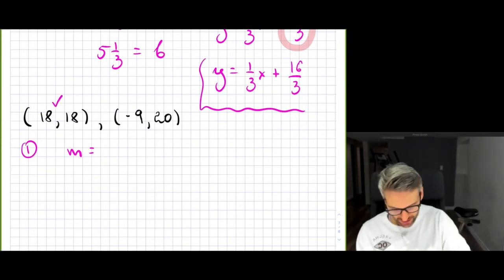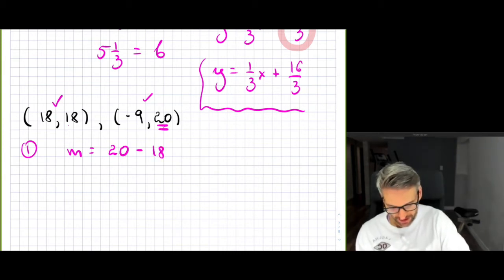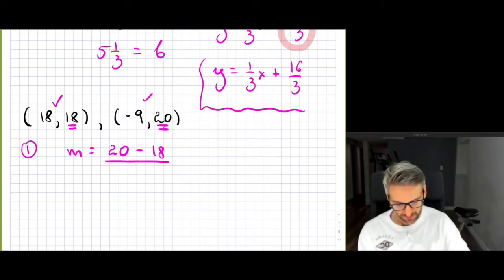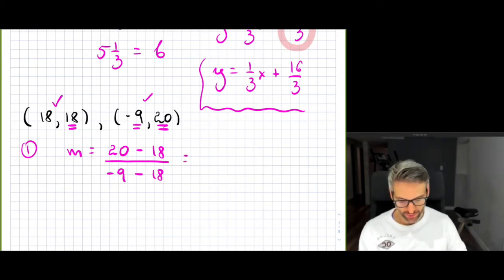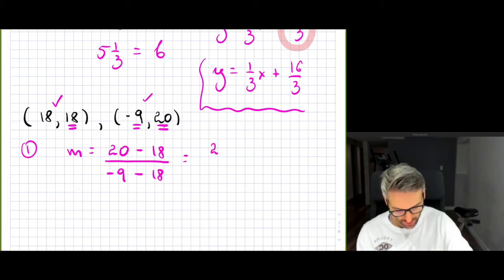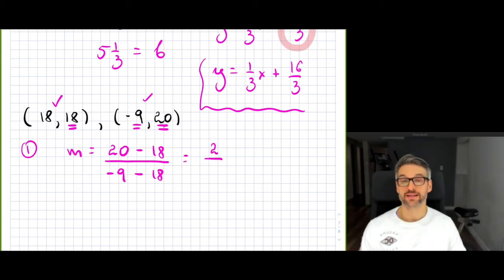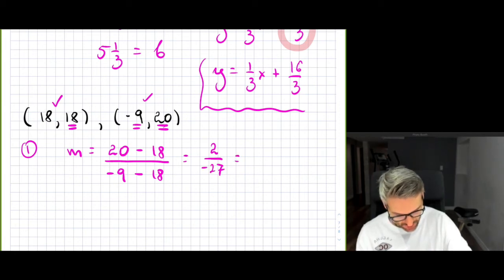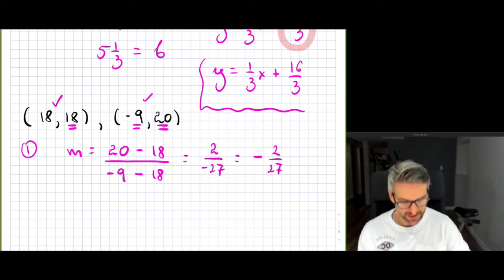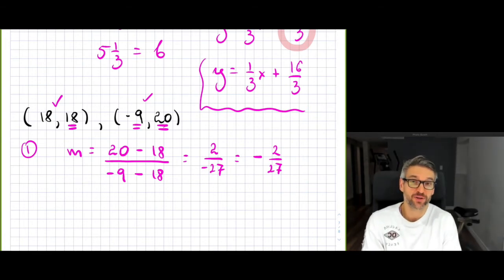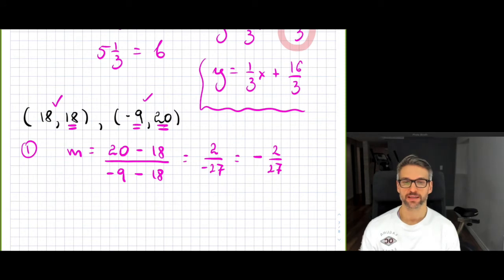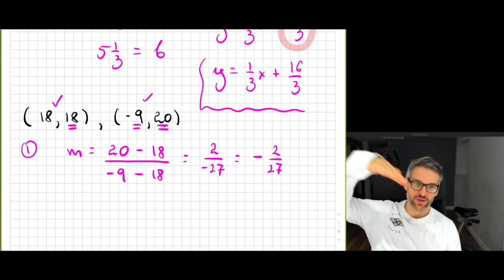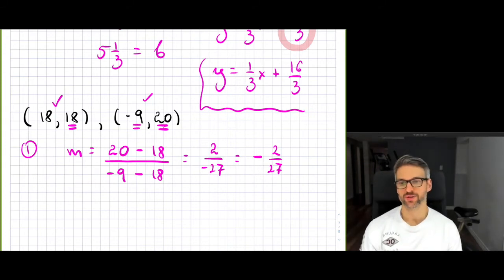Calling the first point (18, ...) point one and the second point two: y2 is 20 minus 18, all over x: negative 9 minus 18. So the numerator is 2, and the denominator is negative 27. Your slope is negative 2 over 27 — where the negative is placed doesn't matter; we typically put it on top or in front. So we have a small negative slope, meaning the line goes in a downward direction.